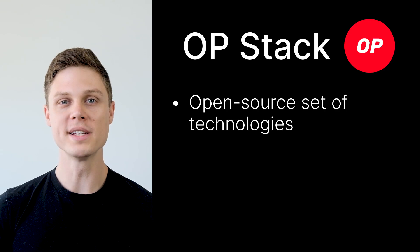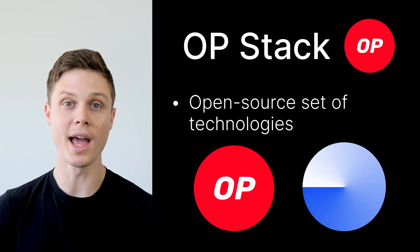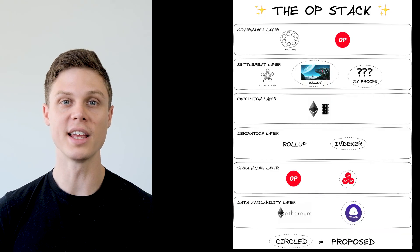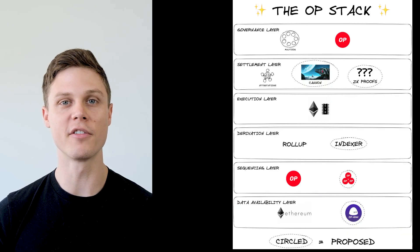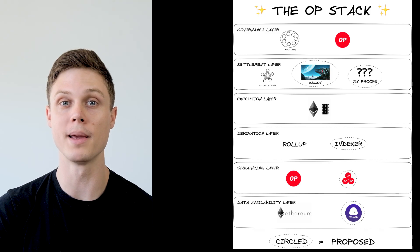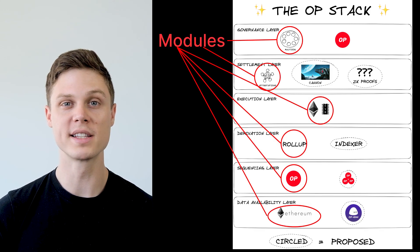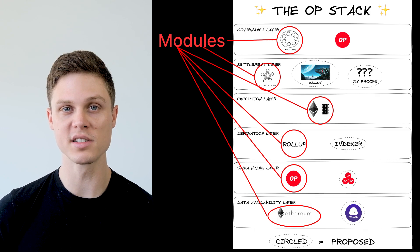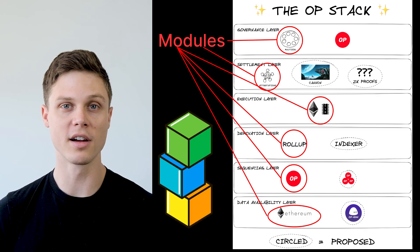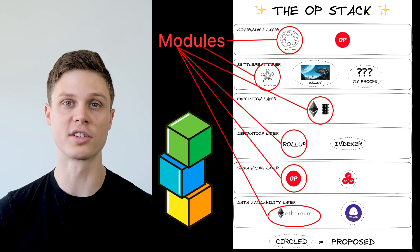At its core, the OP stack is a set of technologies that powers the Optimism and now the BASE blockchain networks. It is called a stack because there are many different layers of software needed to run the many parts of a complete blockchain. The OP stack breaks the technology for each of these layers down into modules, which can be combined together in a modular way in order to create a complete layer 2 blockchain.